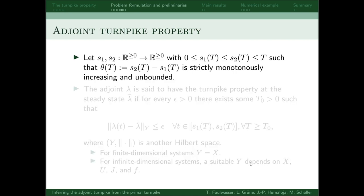Now that we have introduced the adjoint state lambda and the corresponding steady state lambda bar, we introduce the adjoint turnpike property, which is relatively similar to the primal turnpike property. So, similar to the primal turnpike property, we take these two functions S1 and S2, such that the difference is strictly monotonously increasing and grows unboundedly.